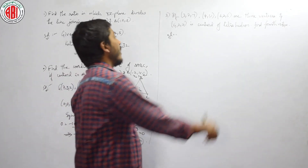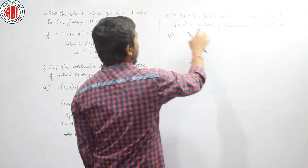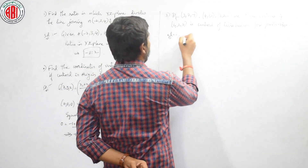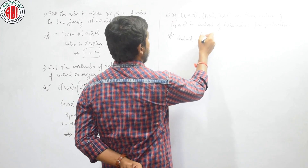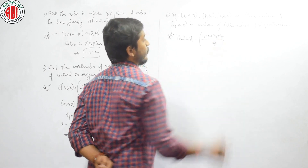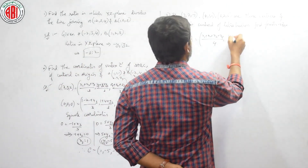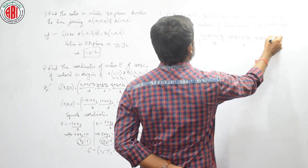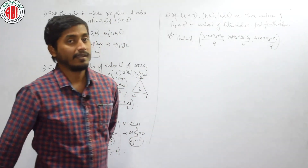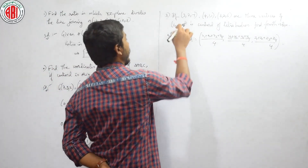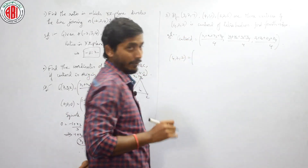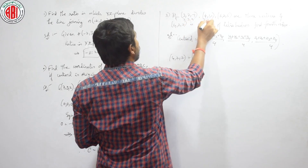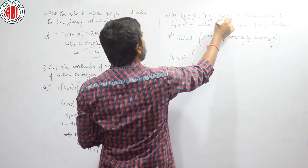Now let us have one more question. He gave 3 coordinates of a tetrahedron and the centroid of the tetrahedron and is asking us to find the fourth vertex. The centroid of tetrahedron formula is: (X1 plus X2 plus X3 plus X4) by 4, (Y1 plus Y2 plus Y3 plus Y4) divided by 4, and (Z1 plus Z2 plus Z3 plus Z4) divided by 4. The centroid given here is (4, 2, 2). Shall we substitute?